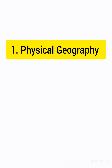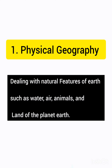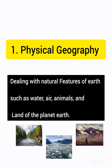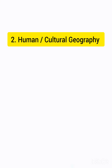Physical geography is the branch of geography dealing with the natural features of the earth, such as water, air, animals, and land of the planet earth.